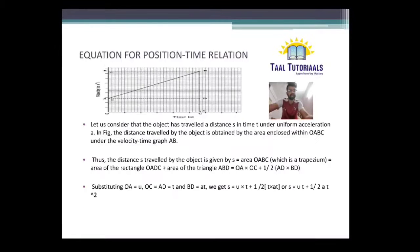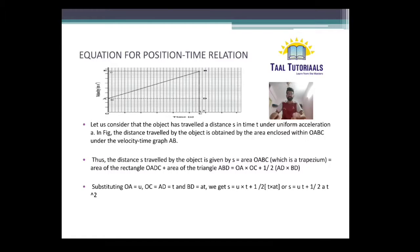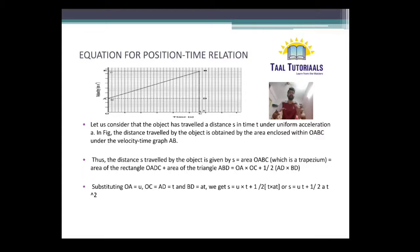Now we will come to the second equation, that is the equation for position-time relation. Using the same graph, let us consider that the object has traveled a distance S in time T under uniform acceleration A. The distance traveled by the object is obtained by the area enclosed within OABC under the velocity-time graph AB. So distance is equal to the area of trapezium OABC, which is a rectangle plus triangle: area of rectangle OADC plus area of triangle ABD.